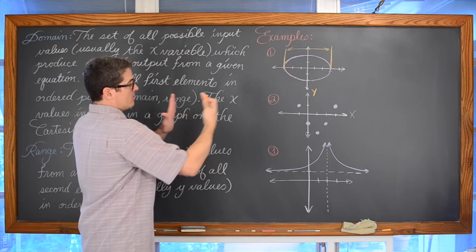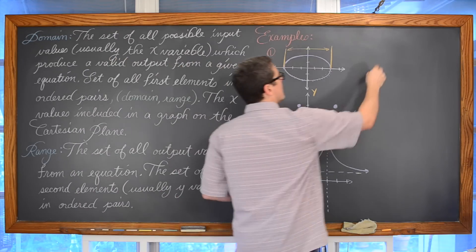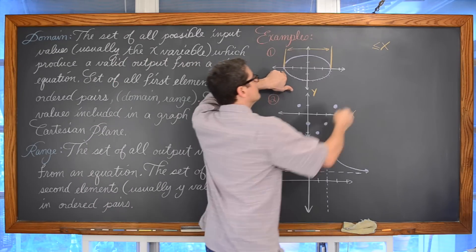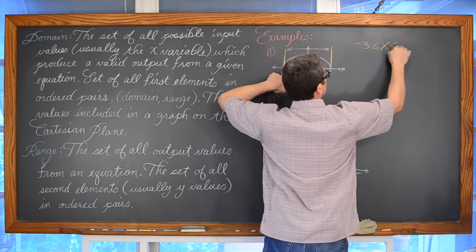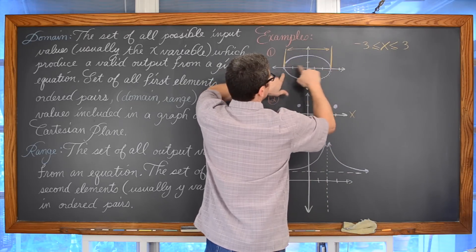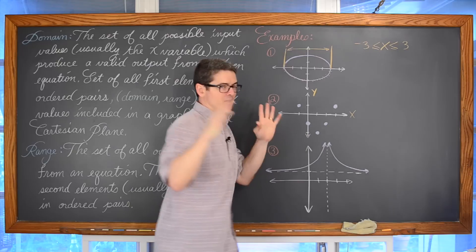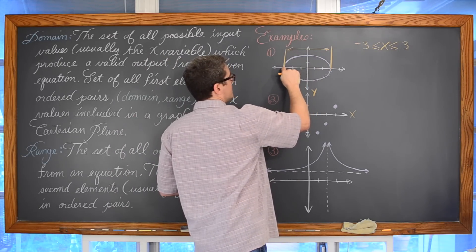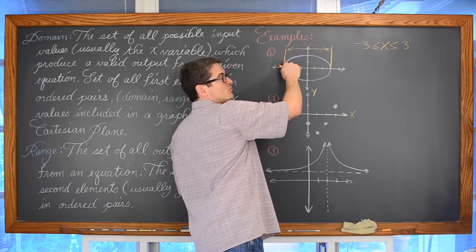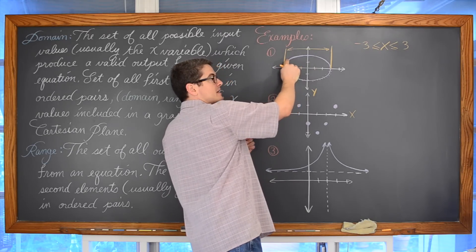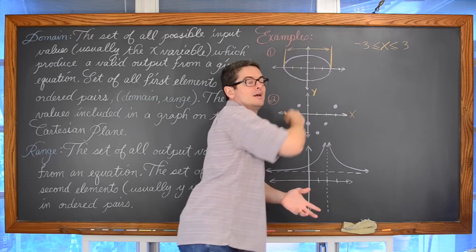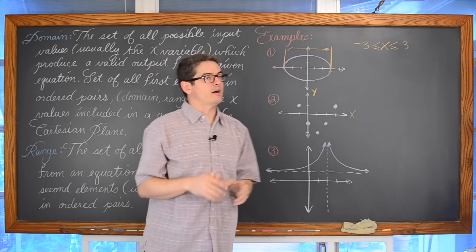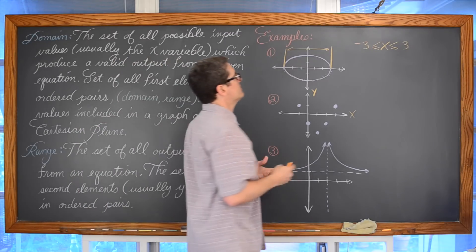So what values of x are included in all of these points? The domain, looking at that horizontal movement, is going to be x: the smallest value of x included looks like it goes as far to the left as negative three, and as far to the right as positive three. This is a continuous graph, so every x value — negative two point nine, negative two point seven, and so on — any x between negative three and positive three, including those values, would be part of the domain.